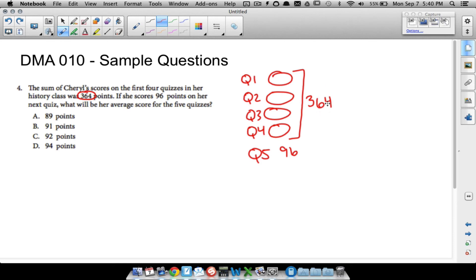We don't know these individual scores, but it doesn't matter since we know all four is 364 points. Let's take 364 and add this fifth quiz of 96. 6 and 4 is 10, 0 carry the 1. 9 plus 6 is 15, plus 1 is 16, put down your 6 carry the 1. 3 and 1 is 4. So we got 460 points total. Obviously that is not her average. We want to take the 460 and divide it by 5.